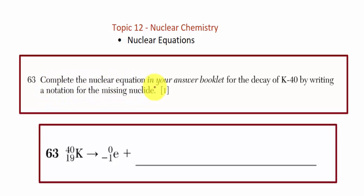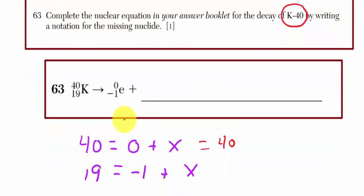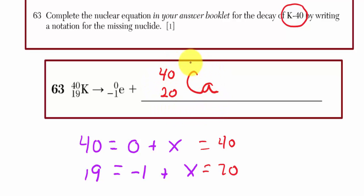Question 63: Complete the nuclear equation for the decay of K-40 by writing the notation for the missing nuclide. Mass number must be conserved: 40 equals 0 plus x, so x equals 40. For the nuclear charge: 19 equals negative 1 plus x, so x equals 20. We're looking for a particle with mass number 40 and nuclear charge 20. Looking at the periodic table, element 20 is calcium. The missing piece is calcium-40.